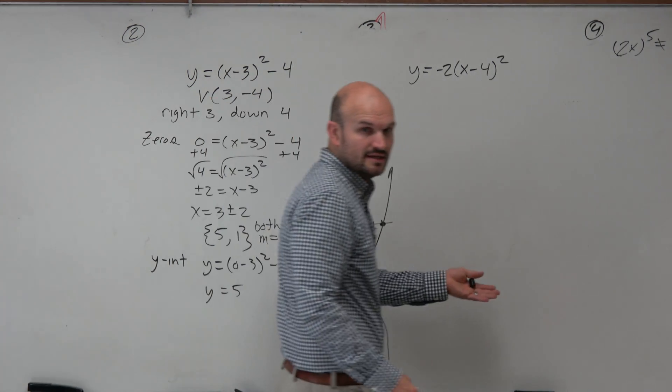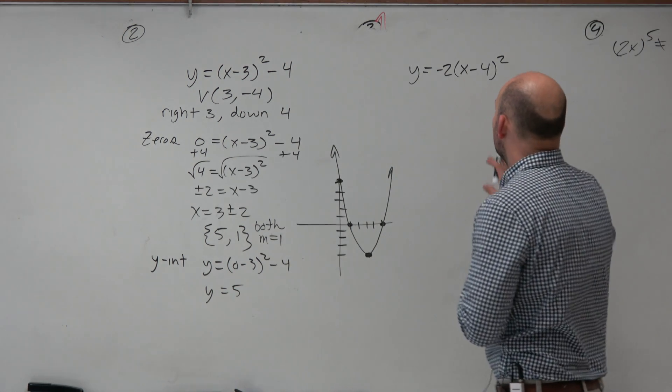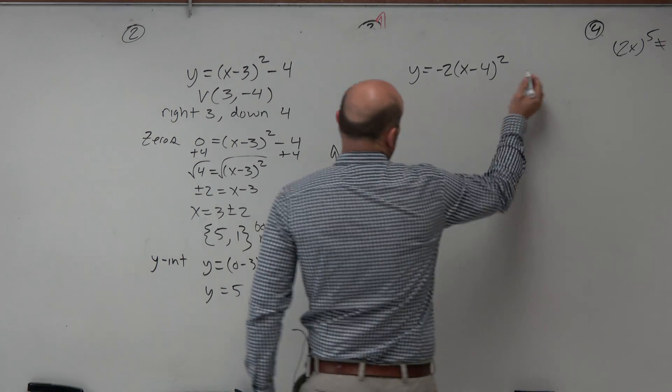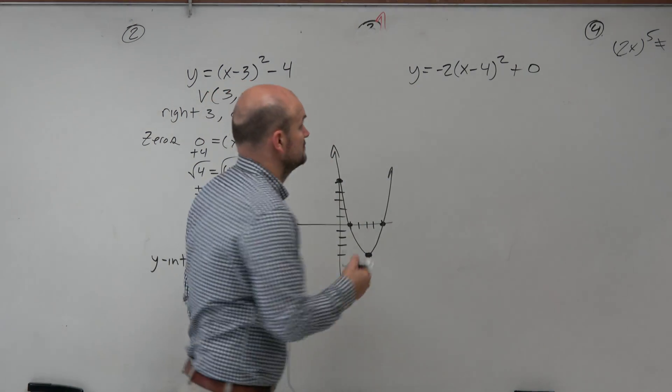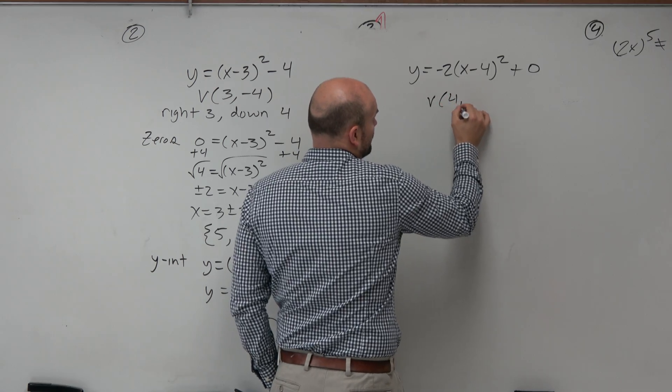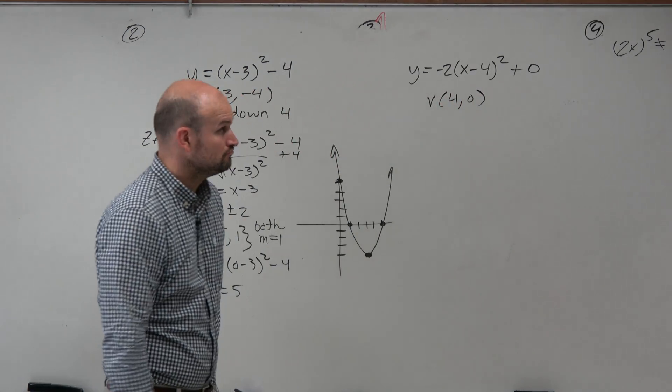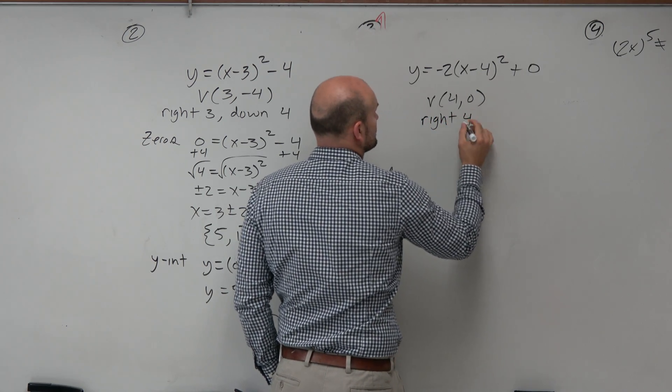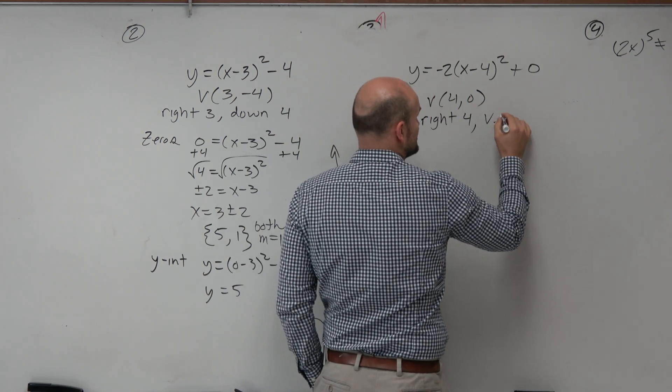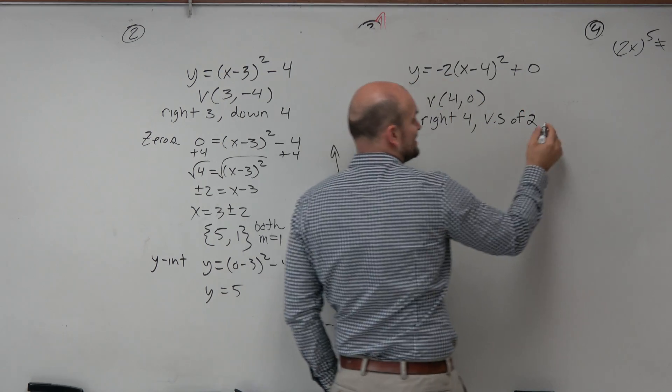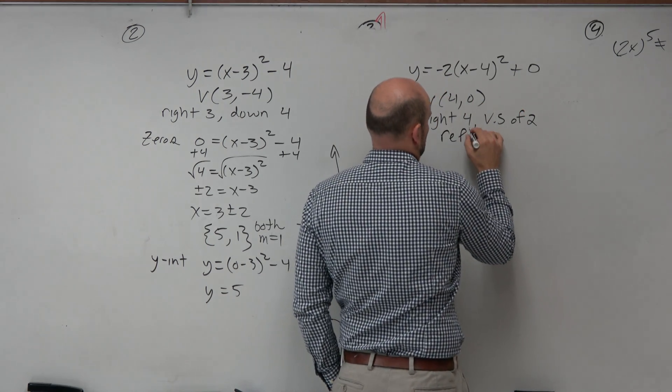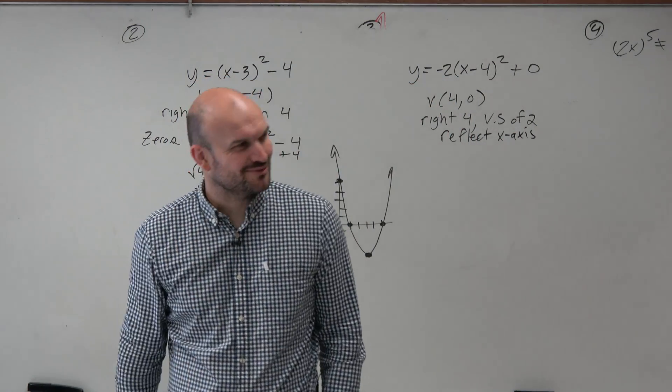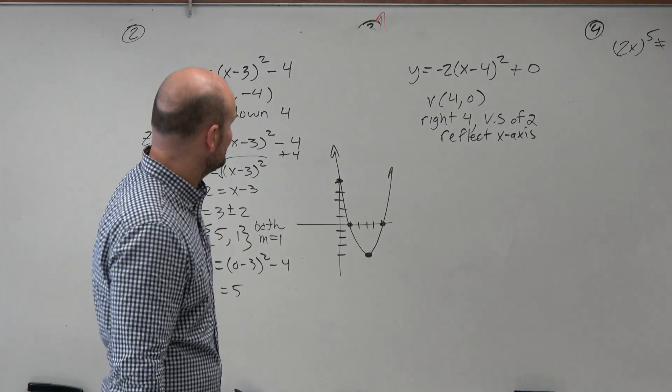Now let's take a look at this example. Same kind of idea. We don't have a k, so we can say that's 0. So our vertex is going to be (4, 0). What are the transformations? Well, again, we have right 4. We have a vertical stretch of 2, and we have a reflect over the x-axis. That's a good review of what we've already learned.